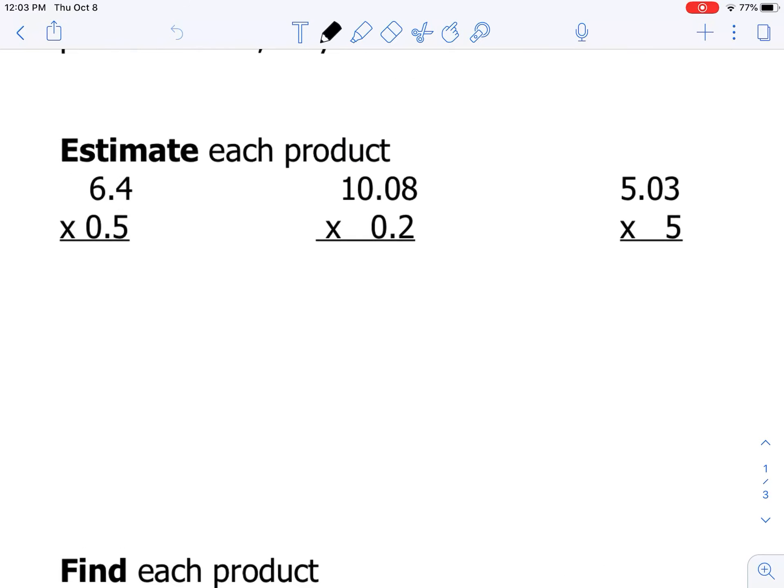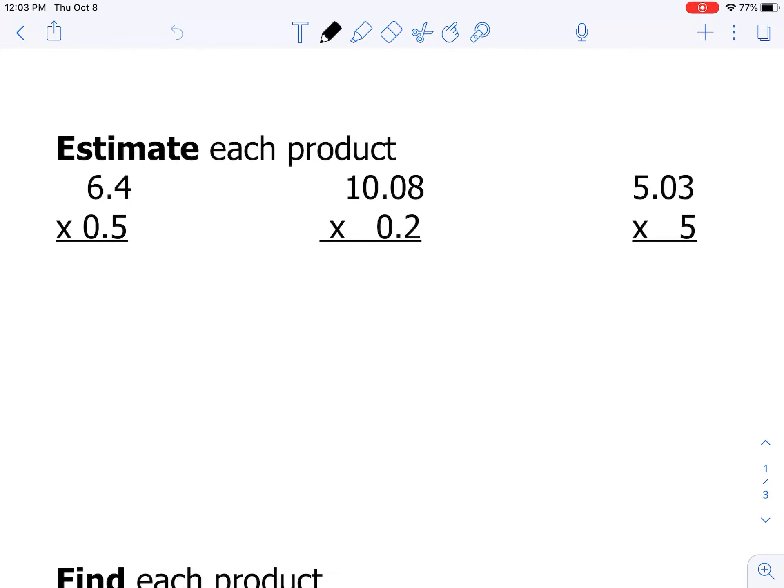I'm just going to zoom in here. We have 6.4 that we're multiplying with 0.5, and I know 0.5 is the same as one half. So I'm going to take half of 6.4, and half of each of those would be the 3 and the 2. So I think it's going to be 3.2.